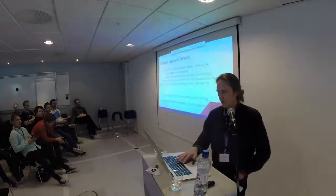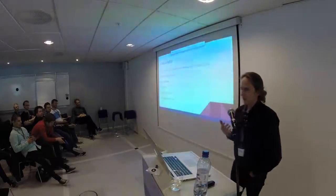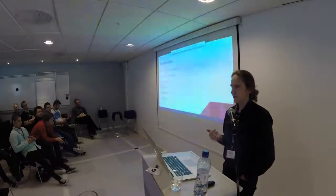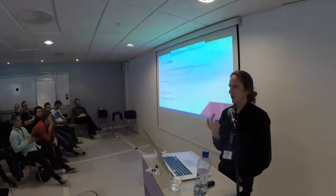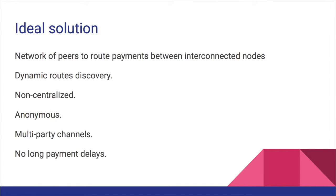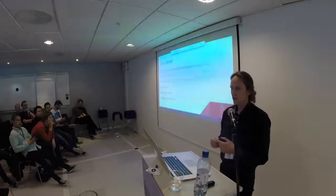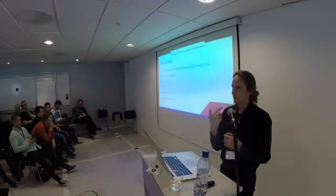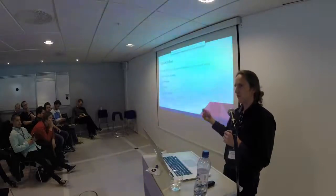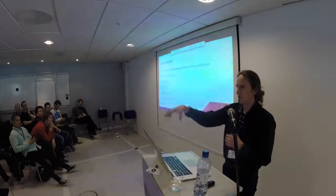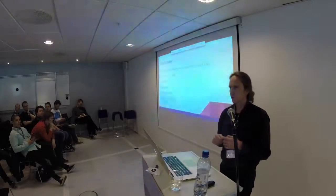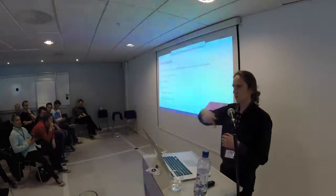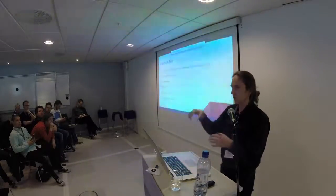To make it an even better solution, we could scale it — so instead of doing it between just two parties, how about we do that with another party which has a channel between you and that party and me and you? Then I can pay her or him through you, and we have a network. The Lightning Network is all about this network concept — not only doing transactions one-on-one, but also with people we don't have a direct link with, hopping transactions through any node in the network.